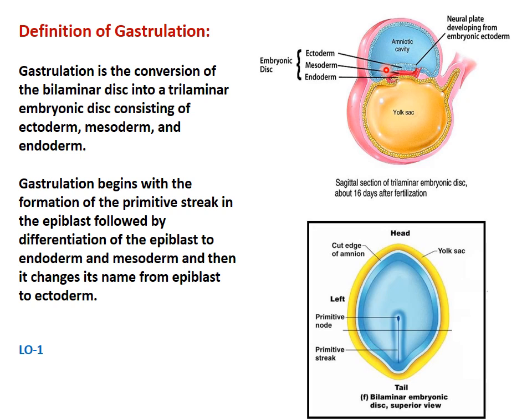Gastrulation begins with the formation of the primitive streak in the epiblast, followed by differentiation of epiblast to endoderm and mesoderm. Then the epiblast changes its name to ectoderm.